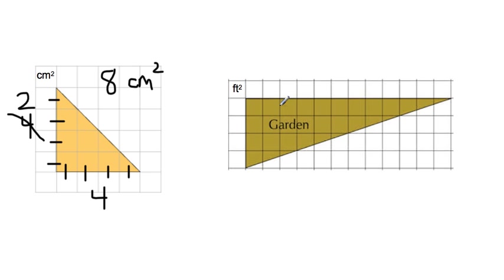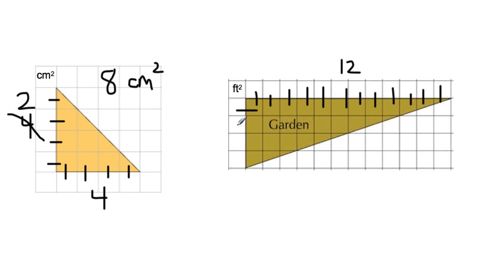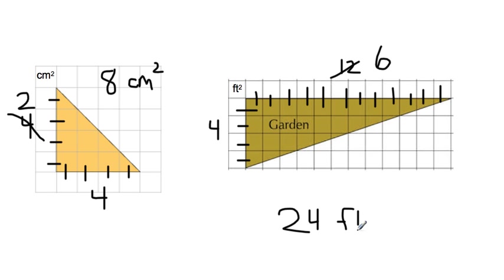Looking at the next triangle, the base is what it sits on — a triangle can't sit on a diagonal, it would fall over. So we count the flat base line: 1 through 12, giving us a base of 12. The height counts up: 1, 2, 3, 4 — so the height is 4. We could cut either number in half, but let's cut the bigger one: 12 becomes 6. Now multiply: 6 times 4 is 24 feet squared. Make sure you square that unit.